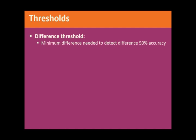It's the minimum amount of difference that needs to exist for you to be able to detect that there actually is a difference with that same 50% accuracy that we talked about with the absolute threshold. That's always our cutoff point between hit and miss.